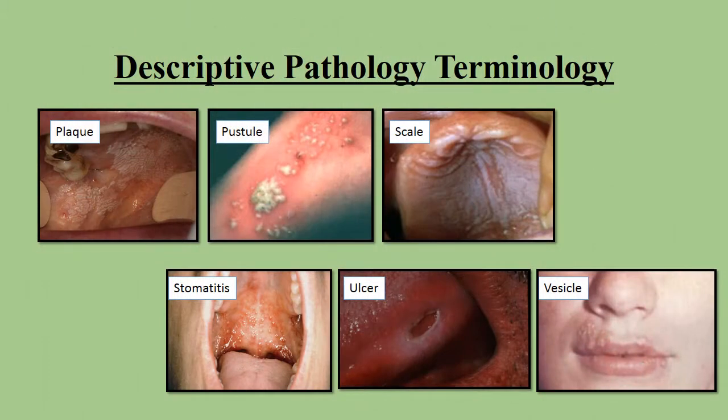Plaque is a flat, superficial lesion. Pustule means small, elevated, circumscribed, pus-contained lesion. Scale is thin, compressed, superficial flake of epithelia. Stomatitis means generalized inflammatory conditions of the oral mucosa. Ulcer means crater-like circumscribed surface lesion resulting from necrosis of epithelia.